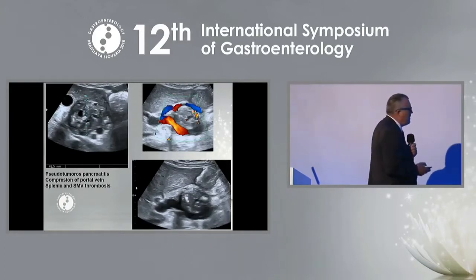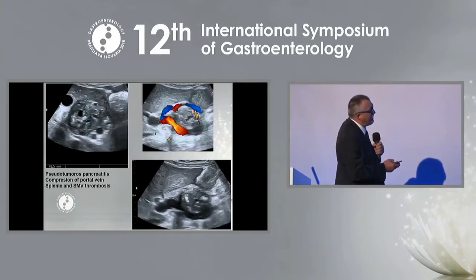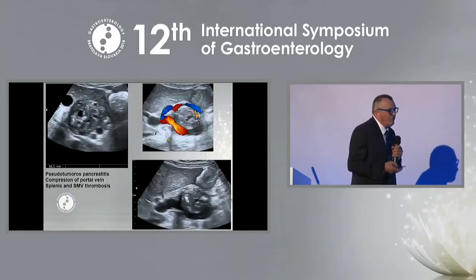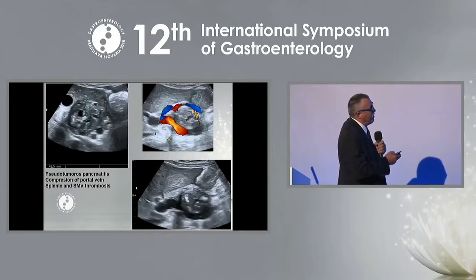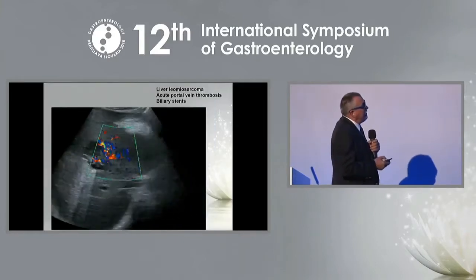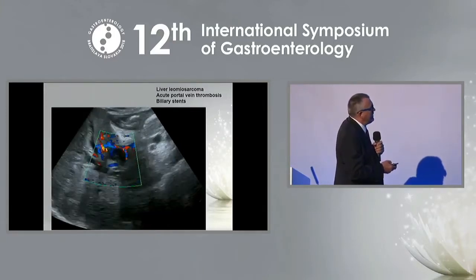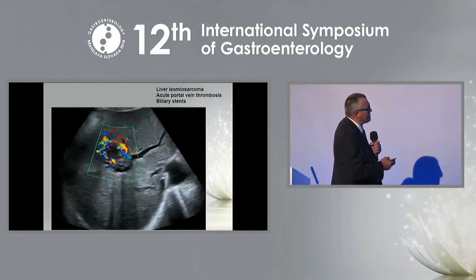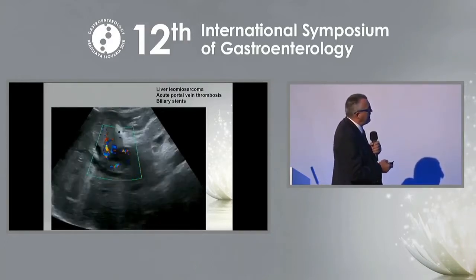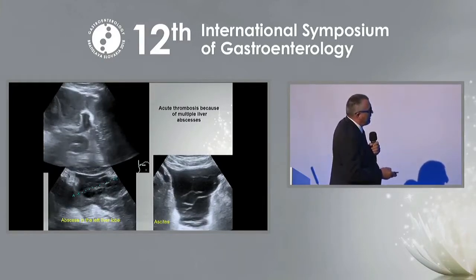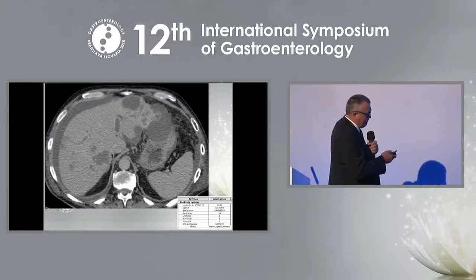In acute pancreatitis, compression of the splenic vein is very common. In the late stages of chronic pancreatitis, we found that isolated thrombosis of the splenic or portal vein occurs in 25% of patients. In the acute stage, other diseases can also cause thrombosis — for example, liver leukemia sarcoma with portal vein thrombosis and biliary stents visible, and liver abscesses with thrombosis of the left portal branch, which is well seen on CT.